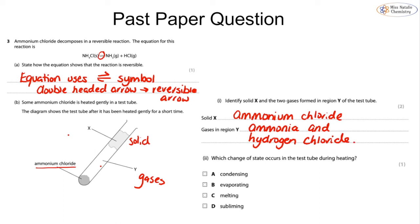Which change of state occurs in the test tube during heating? Well, we're going straight from a solid to a gas with no passing through of a liquid, so this is known as subliming, which is D.